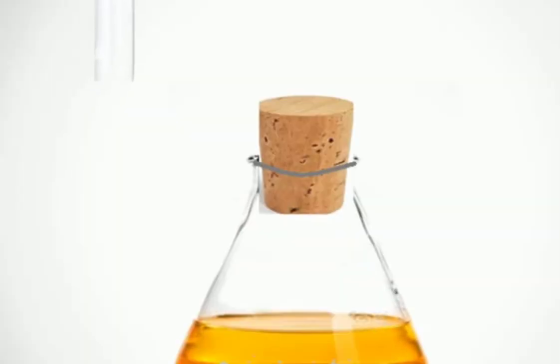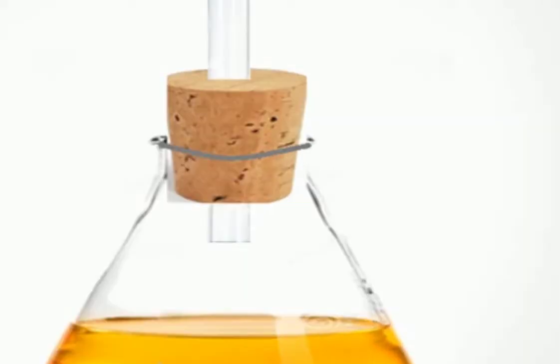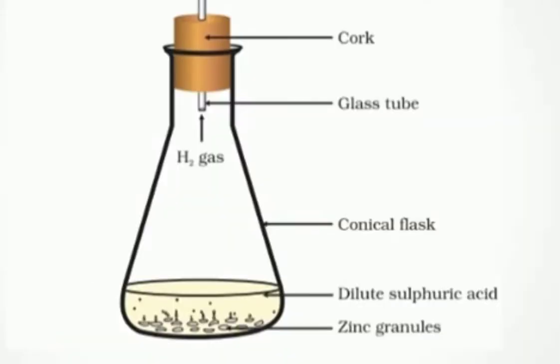Insert a glass tube. In this reaction we can observe a rise in temperature of the conical flask and bubbles in dilute sulfuric acid around zinc granules. Here we can observe liberation of hydrogen gas.